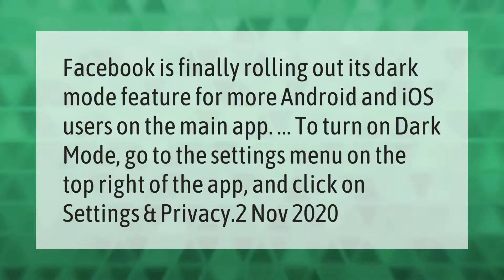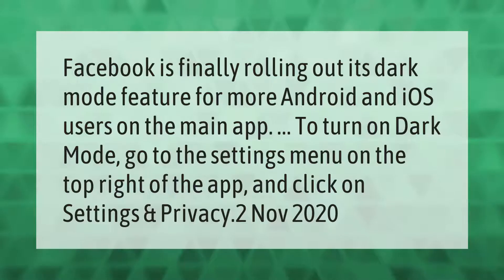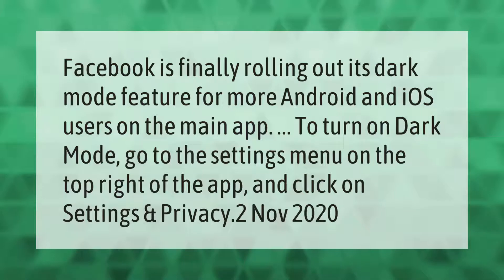Facebook is finally rolling out its dark mode feature for more Android and iOS users on the main app. To turn on dark mode, go to the settings menu on the top right of the app and click on Settings.